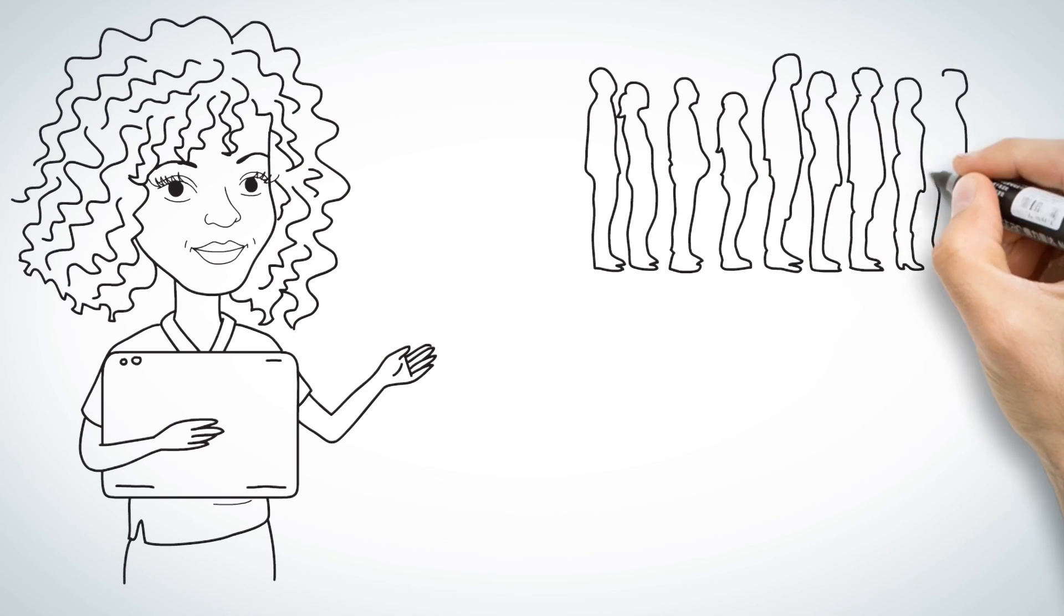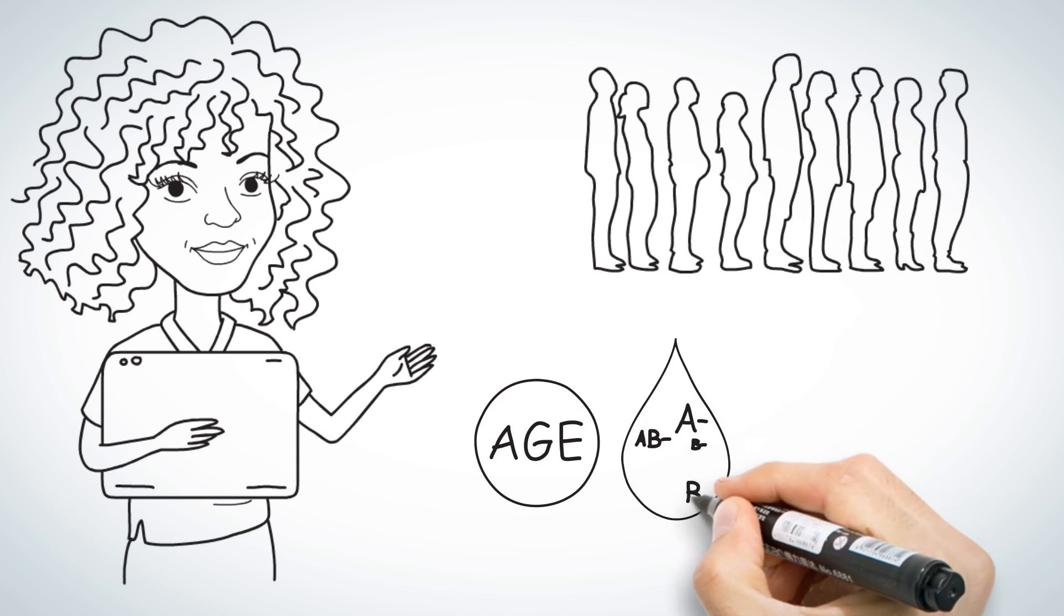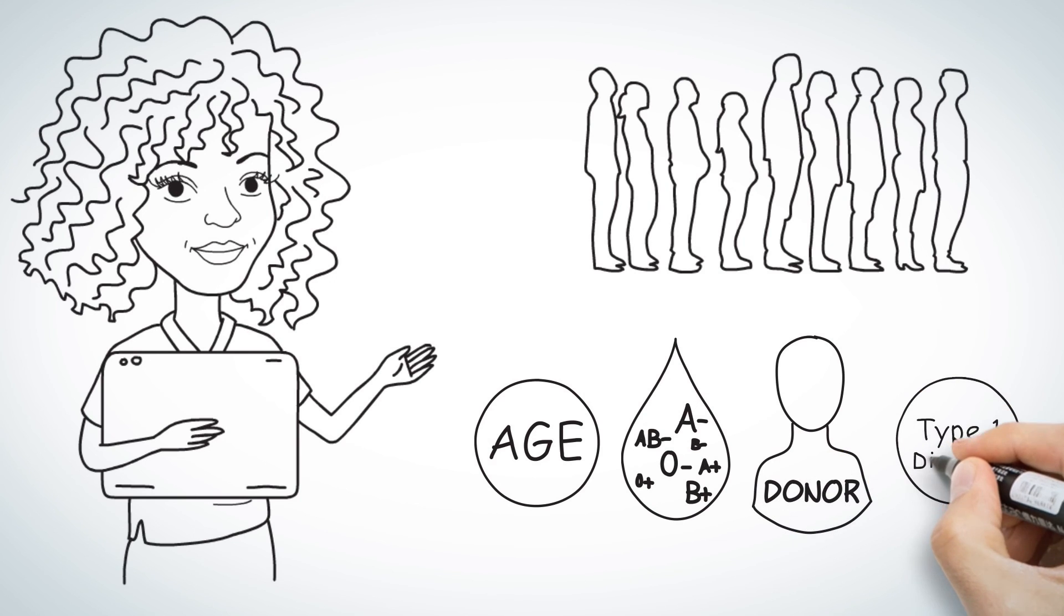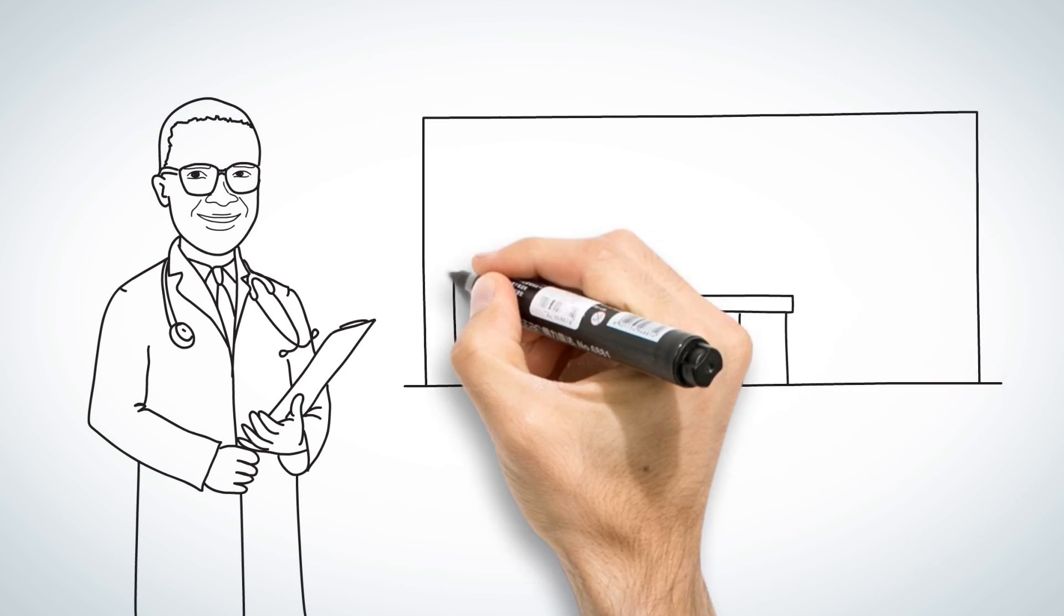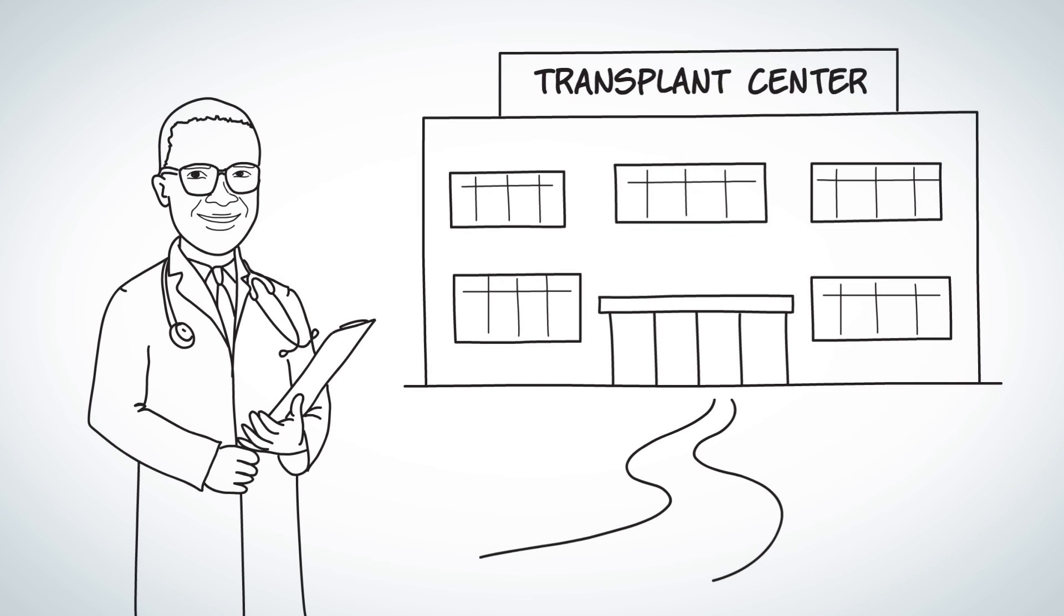Kidney transplants are in demand because of the benefits, so there is typically a line to get one. But sometimes the line is shorter depending on your age, blood type, if you have a living donor, if you are type 1 diabetic, have hepatitis, and so on. The best advice I can give you is to ask your kidney doctor about transplantation and to go visit your local transplant center.